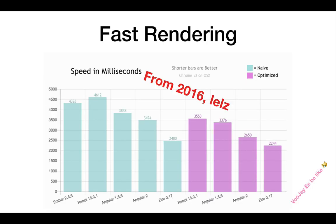Elm rendering is extremely fast. If you have an immutable pure function dealing with immutable data — same input, same output — you can leverage that on a larger tree scale to optimize things that don't need to re-render because the data is the same. That allows you to have a really fast framework. Both Elm and React share this idea.